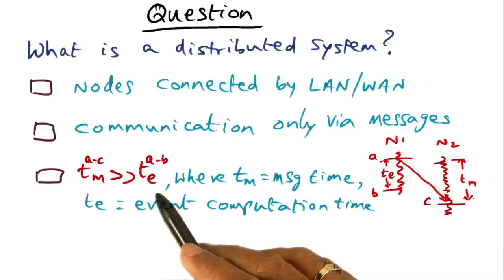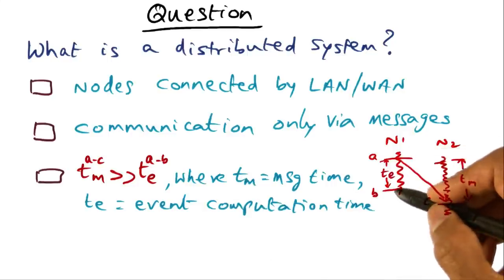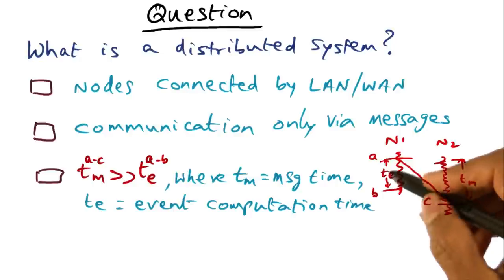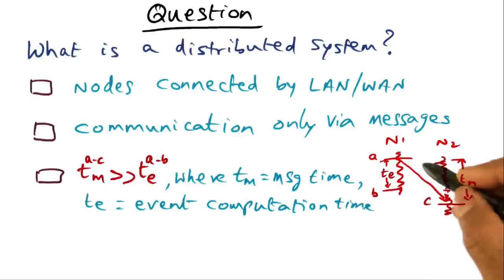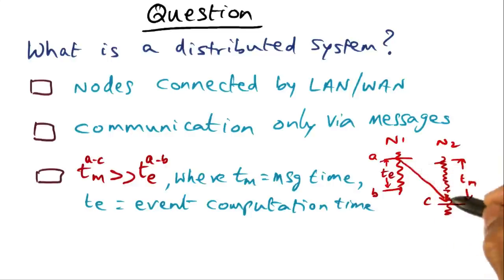And the third choice says that a distributed system is one in which events that are happening on the same node, like A and B, the time between that is called the event time. And the event that is happening across nodes, which is a communication event - node N1 sends a message to node N2, there's a communication event from A to C.